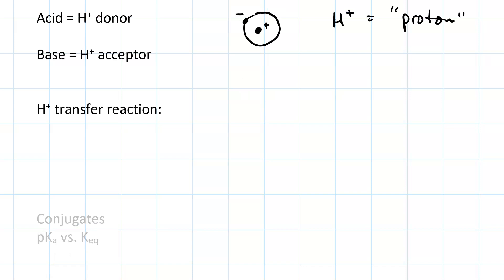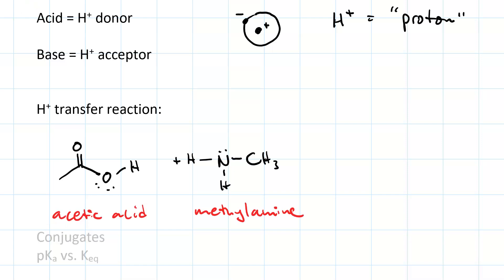Let's look at a characteristic proton transfer reaction. In this case, our acid is going to be acetic acid, shown here, and our base is going to be methylamine, CH3NH2. Incidentally, if you're a Breaking Bad fan, methylamine is how Walt and Jesse put the meth in methamphetamine.